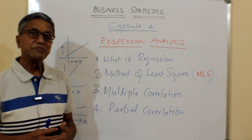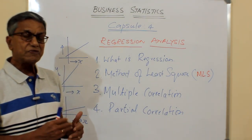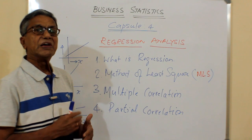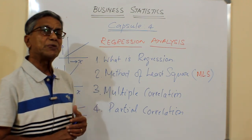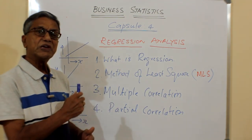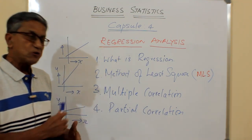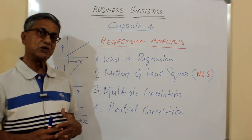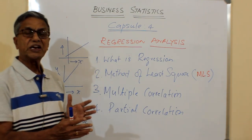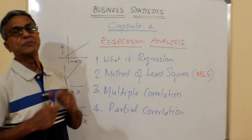Suppose you have three variables: x and z as the independent variables and y as the dependent variable. What we do is hold z at a particular level and try to assess the correlation between x and y. It is also possible to hold x at a particular level and try to arrive at the relationship between z and y. So that is what is called partial correlation — you hold one or two independent variables at a particular level and assess the functional relationship between one independent variable and one dependent variable.